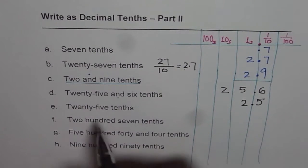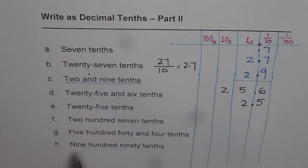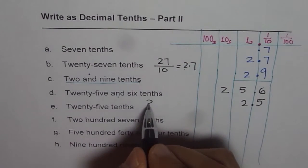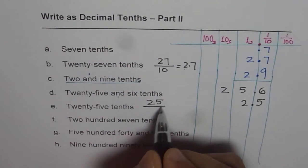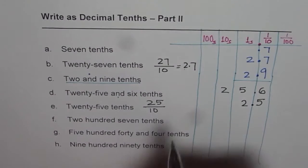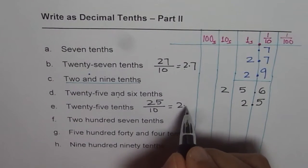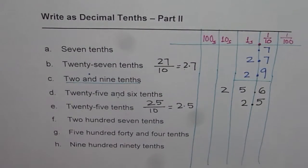You can understand it as 25 over 10. Twenty-five tenths, which is 2.5. That is how you write it.